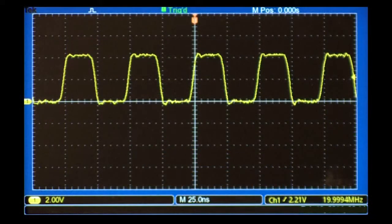The easiest type of signal to trigger on is a periodic one, like a clock. Let's look at a clock signal with frequency of 20 MHz and amplitude of 4 volts.